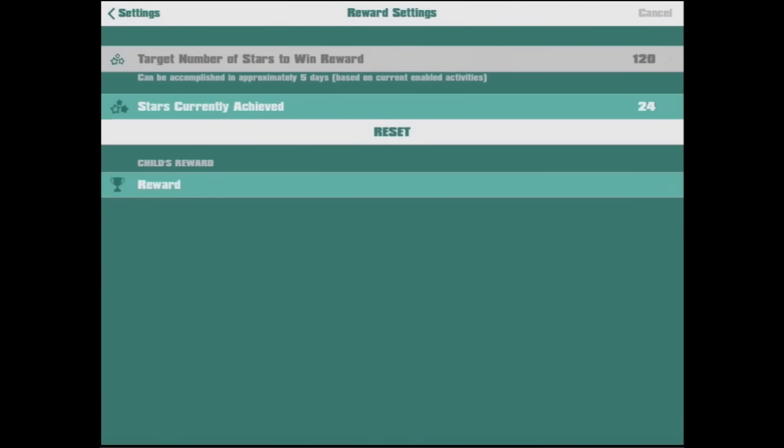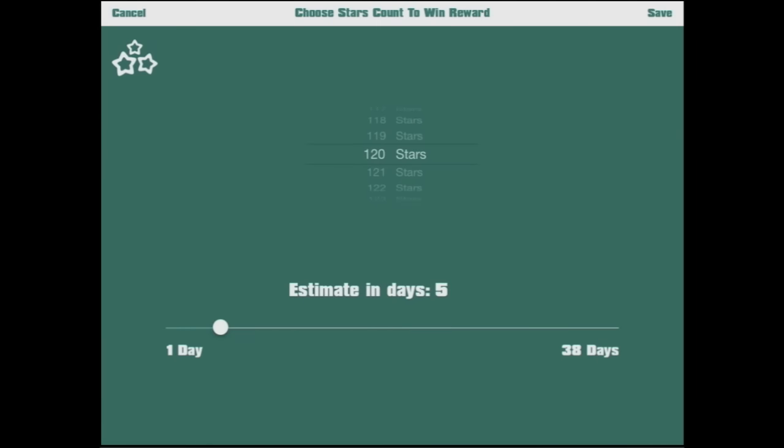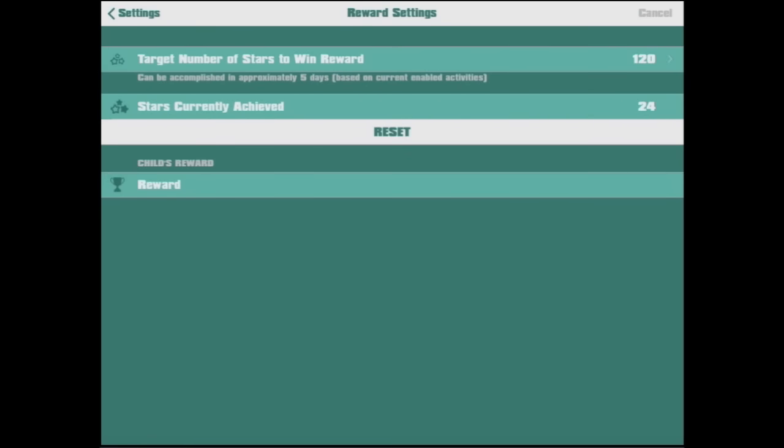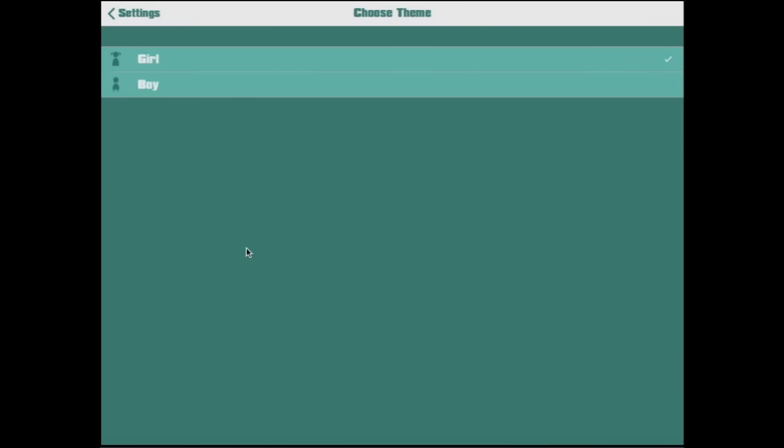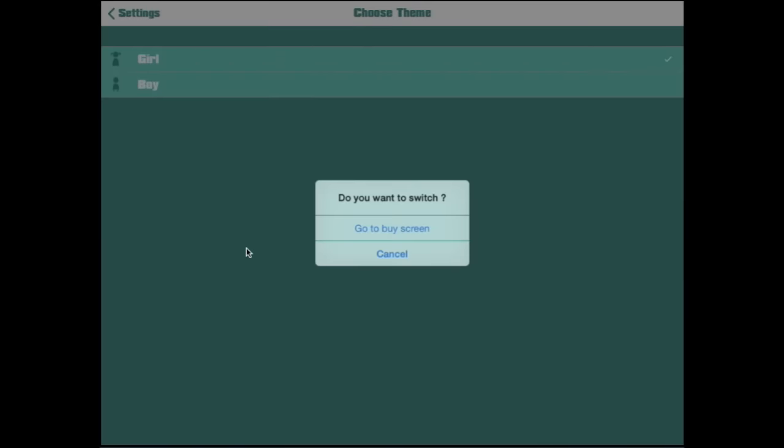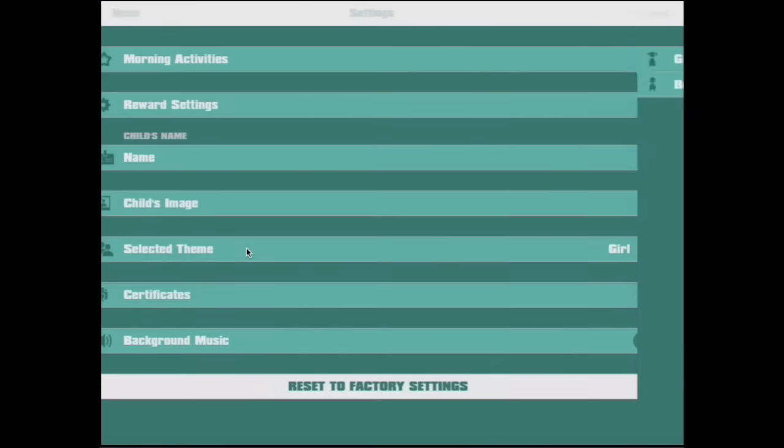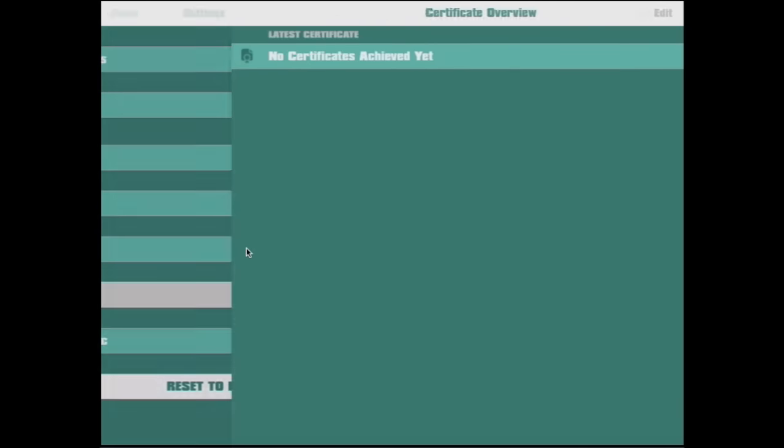Here's the reward settings. We can change how many rewards you need, how many stars you need to get to the reward, and it says you can potentially get it within five days, so that's good. Some kids really need to have a goal. You can put your child's name in, you can put their image in, you can change it as I said to boy or a girl theme. We might just start it again. Oh, I've already bought it. And certificates, no certificates yet.